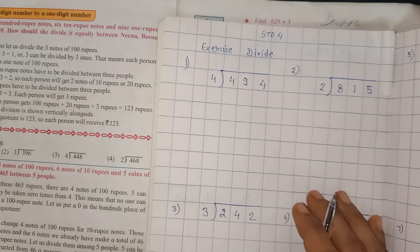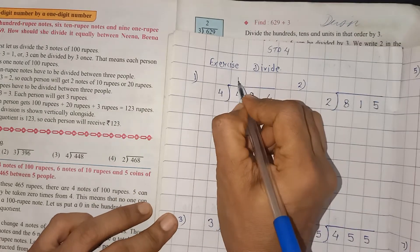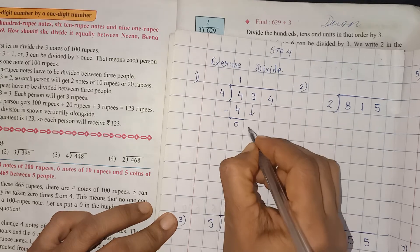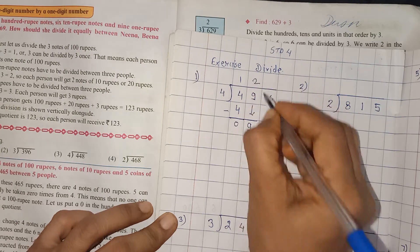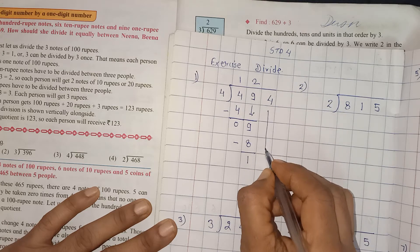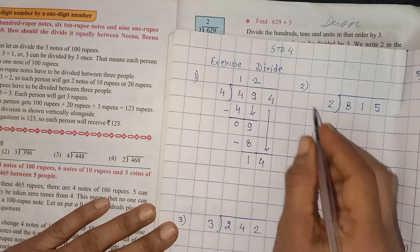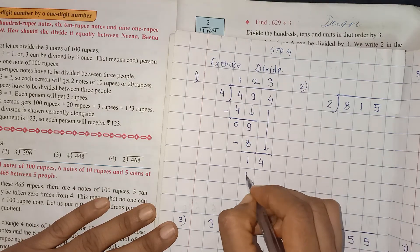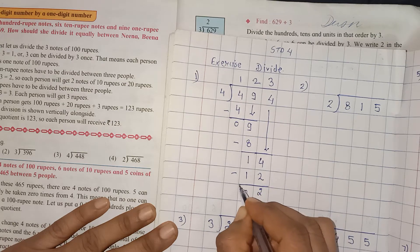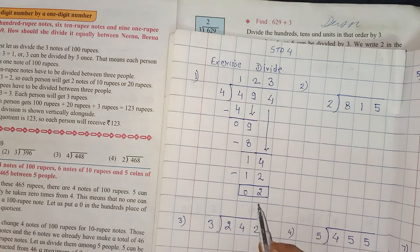Question No. 1: 494 divided by 4. So, 4 ones are 4. Minus 4, bachcho. 9 ko humne neeche le liya. 4 twos are 8. 9 minus 8 is 1. Again, yeh 4 hum neeche le lenge. 4 twos are 8, 4 threes are 12. So yahan pe 3s are, minus 12. Minus kar lete hain. 4 minus 2 is 2, and 1 minus 1 is 0. So answer for this question is 123 and remainder is 2.